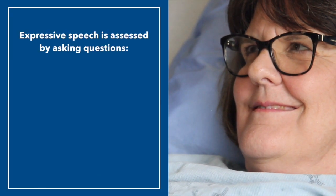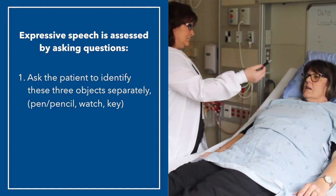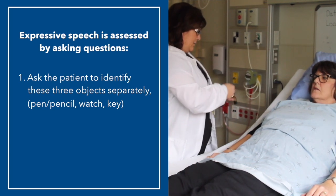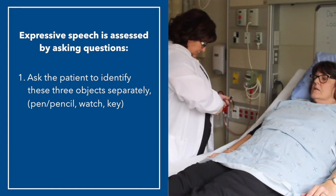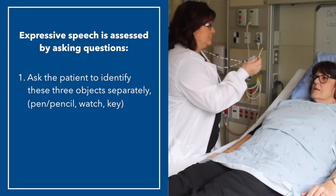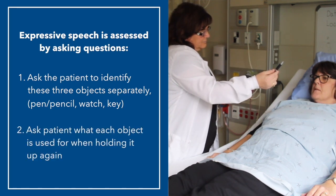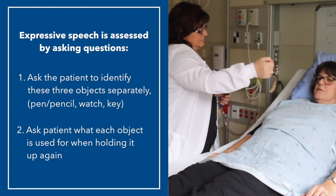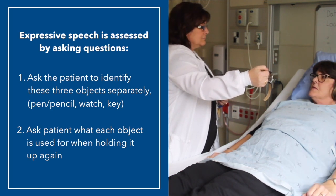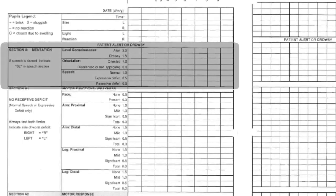Expressive speech is assessed. The nurse shows items and asks their names. For a knife-like item, the patient says 'Knife.' For a watch-like item, the patient says 'Bracelet.' For a key, the patient correctly says 'It's a key.' When asked what she would do with each item, the patient responds 'Sharp,' 'Wrist,' and 'Open.' The patient was unable to state the name and use of the pencil and watch correctly; therefore, they have an expressive deficit and score 4.5 in Section A.